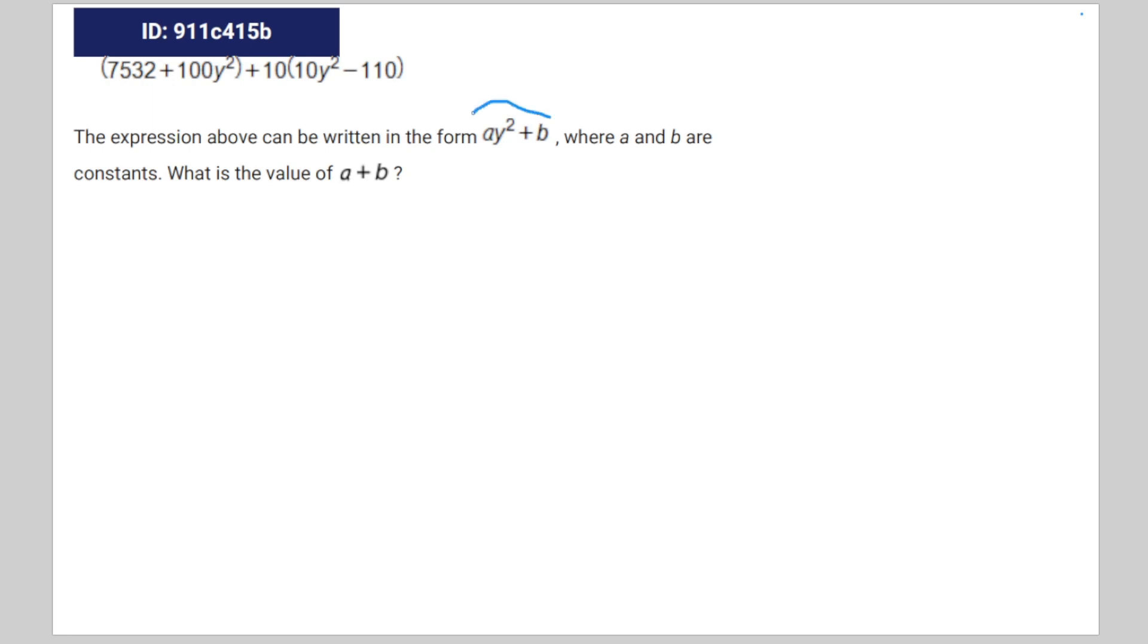To put it bluntly, all you're going to do is set this equation equal to this equation. So it's going to look something like this: 7,532 plus 100y squared plus 10 times 10y squared minus 110